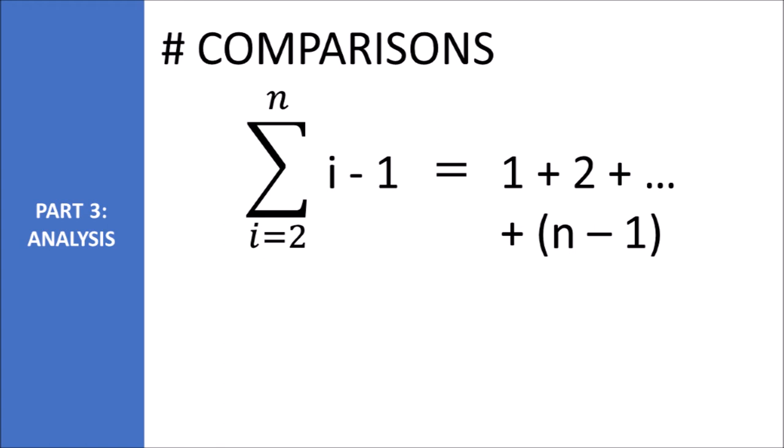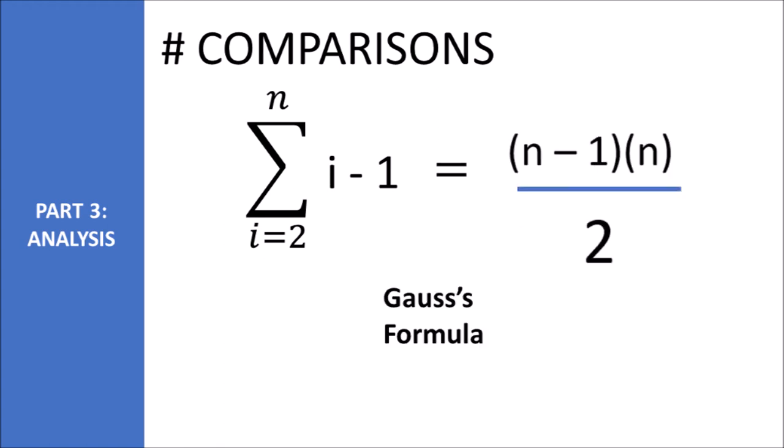This results in n minus one times n divided by two swaps. We know this because of the famous Gauss's trick. If you are unfamiliar with the trick, check out my video in the description.